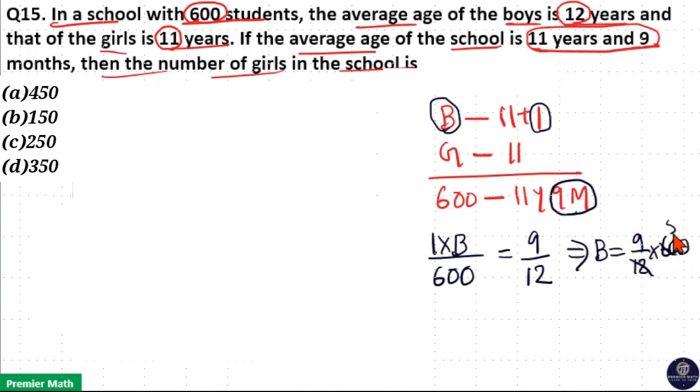Now 12 goes 5 times in 60, so 50 times in 600. So 9 into 50 equals 450, which is the number of boys. Then number of girls equals 600 minus 450, which equals 150. So option B is your answer.